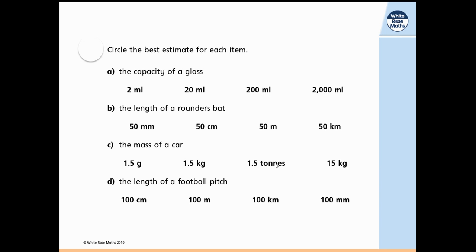And the final one: the length of a football pitch. Well, 100 meters is what the sprint in the Olympics is - that's not going to be the length, it might be the width but not the length. 100 centimeters is just one meter. But 100 kilometers or 100 millimeters - well, clearly the answer is 100 meters. Wait - it's 100 meters for the pitch length.